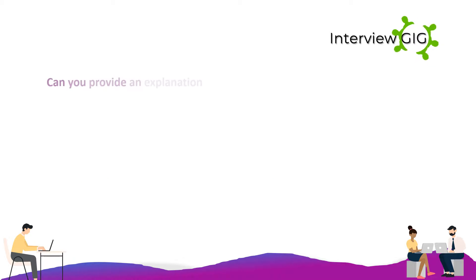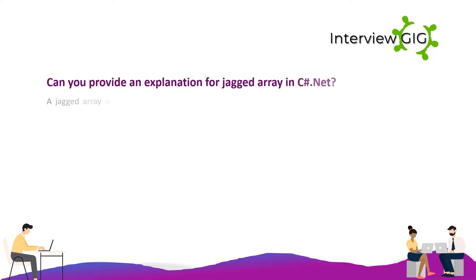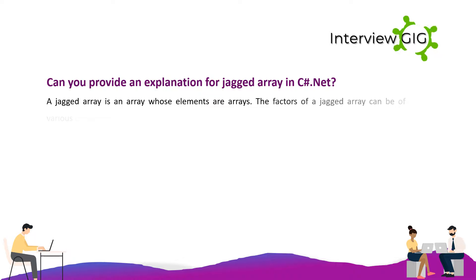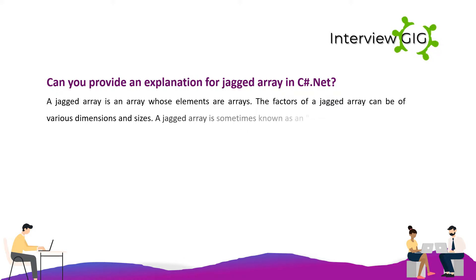What is a jagged array in C#? A jagged array is an array whose elements are arrays. The elements of a jagged array can be of various dimensions and sizes. A jagged array is sometimes called an array of arrays.